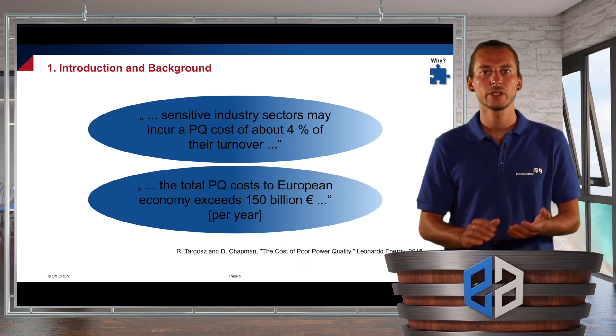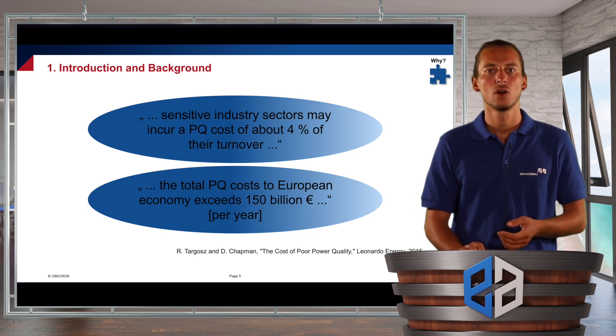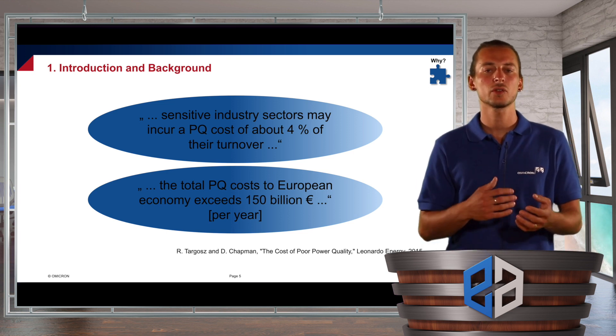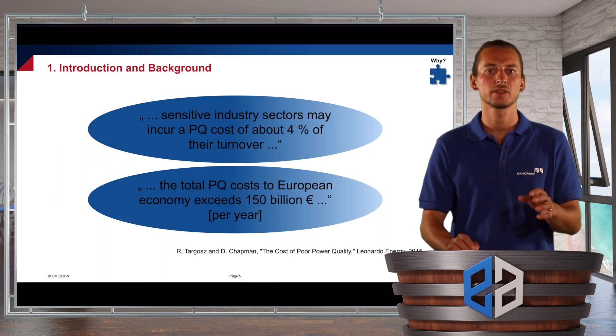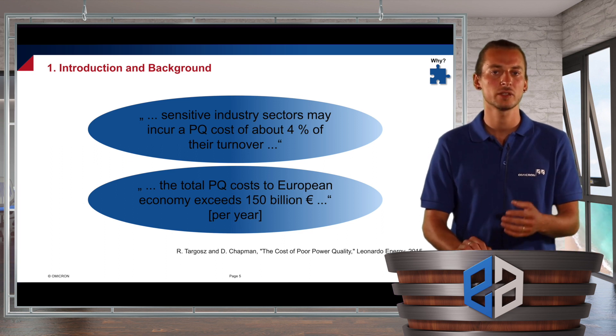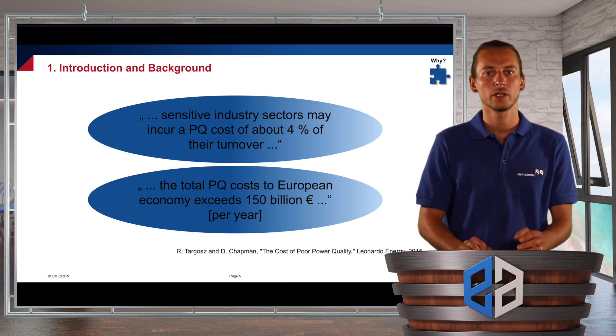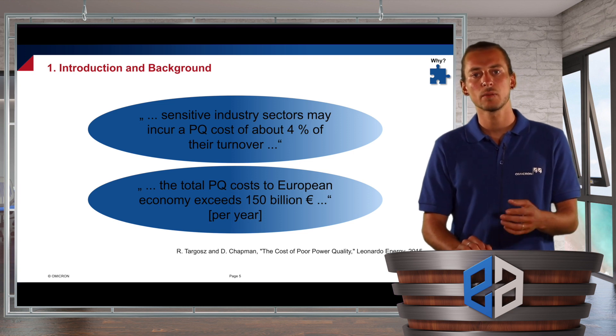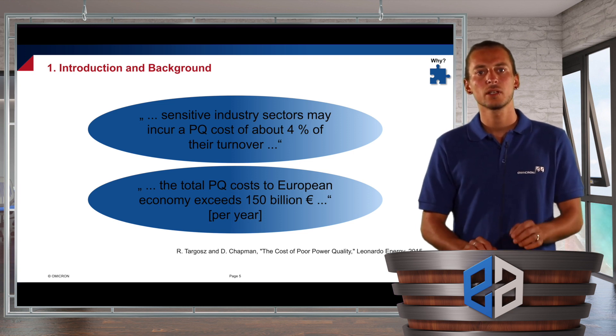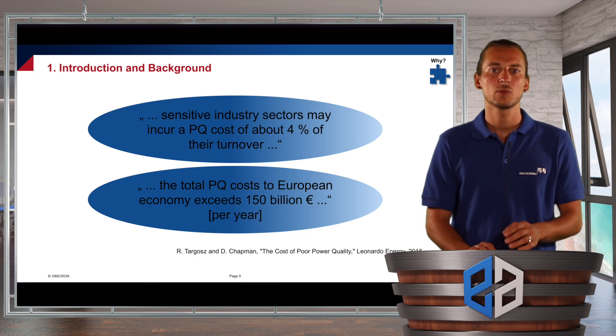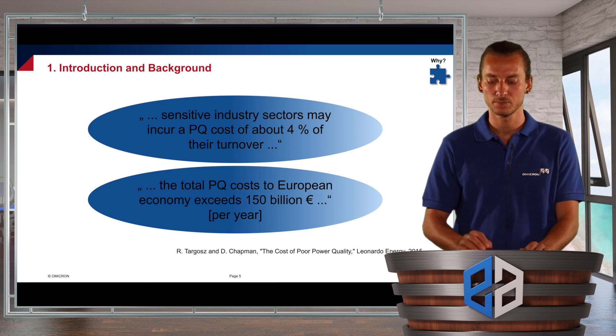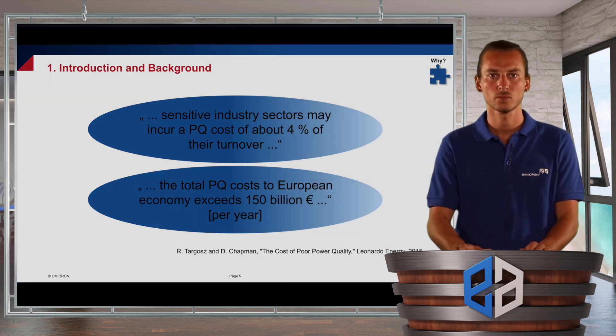And we can also have relative or absolute values for this financial cost. For example, very sensitive industry sectors already have costs for power quality about four percent of their yearly turnover, which is a lot. Or even when we have an absolute number, the European Union spends up to 150 billion euro per year for insufficient power quality.